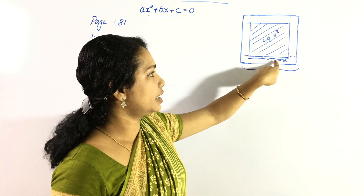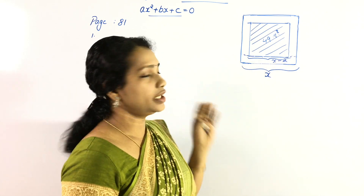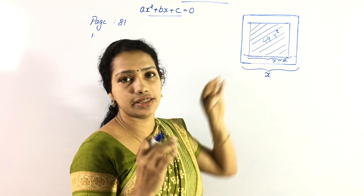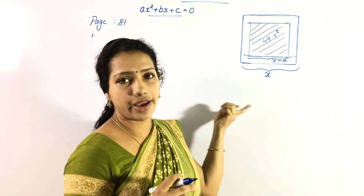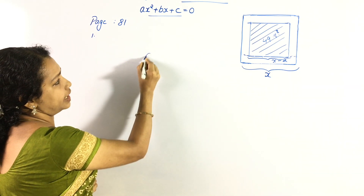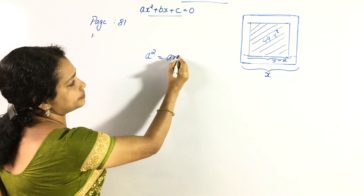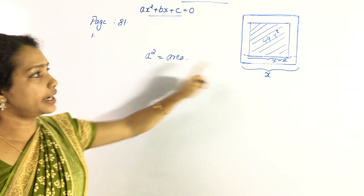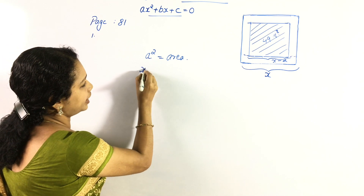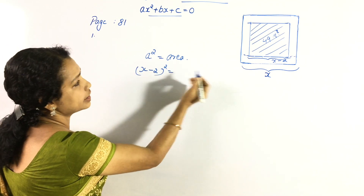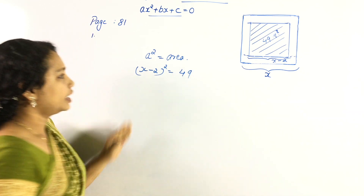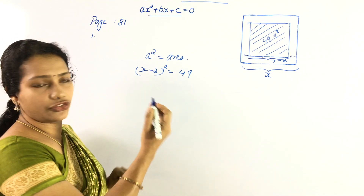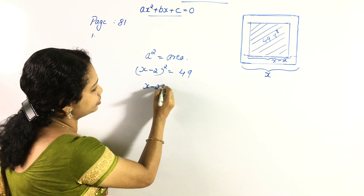The original side is X meters and the reduced side is X-2 meters. The new square has area 49 m². So the formula is: (x-2)² = 49. We need to change the area equation exactly, that is why we have (x-2) all squared equal to 49.